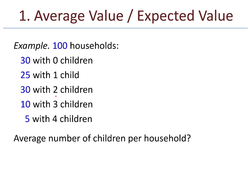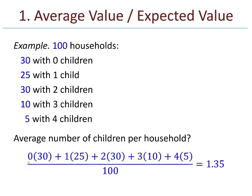What we really need is a weighted average. The 0 has a little more weight—it's multiplied by 30. The 1 is multiplied by 25, 2 by 30, and so on. Each child number is multiplied by the number of households that have that number of children. Then, since there are 100 households altogether, we divide by 100, and the average is 1.35.